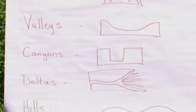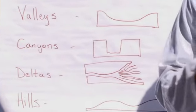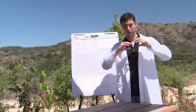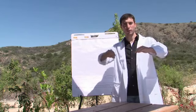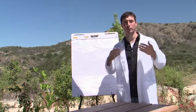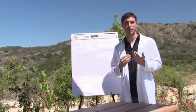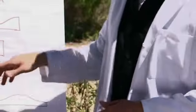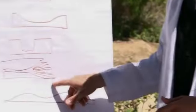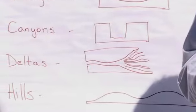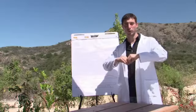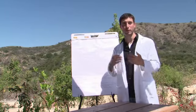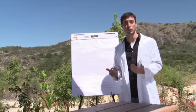Another landform is a delta. Deltas are usually found at the mouth of rivers. They form where lots of water flowing downstream takes sediment along with it, and then through a process called deposition, leaves all that material behind. So deltas are a fan-shaped landform, where water spreads out from the mouth of a river, usually emptying into an ocean.